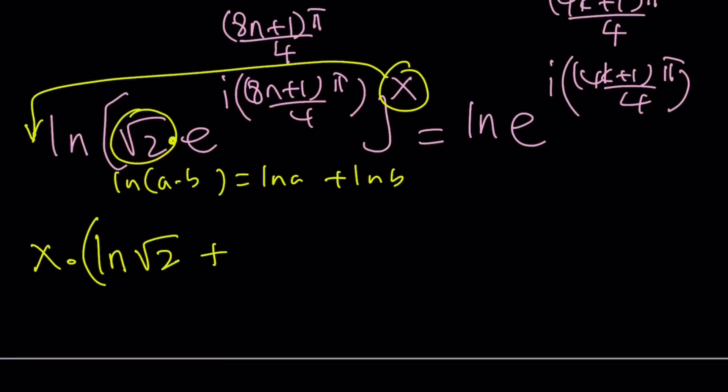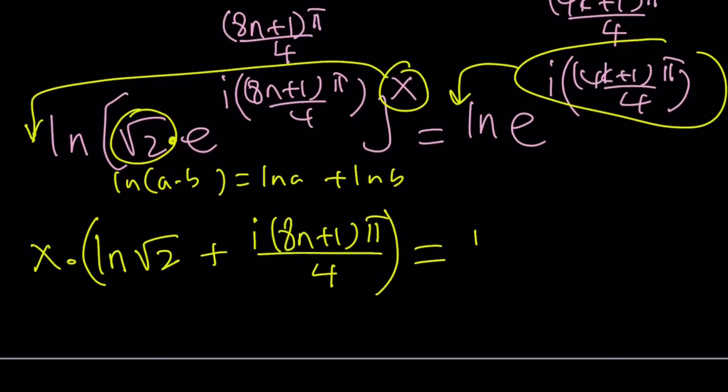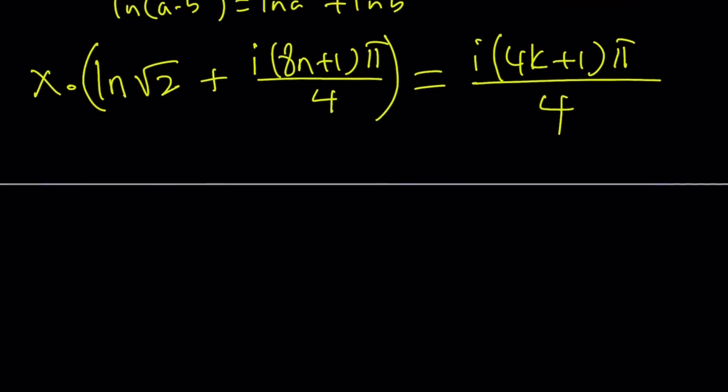The right hand side is going to move to the front. And ln(e) is going to be 1. So we're going to end up with i(4k + 1)π/4. And we get the following expression. This can be written as ln(2^(1/2)) and then (1/2)ln(2).